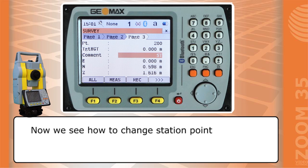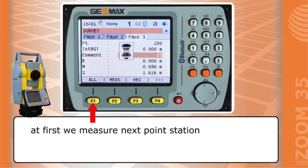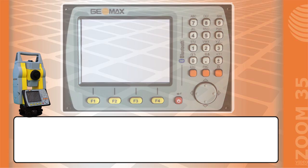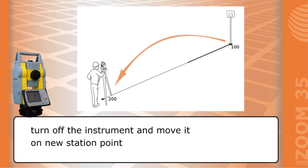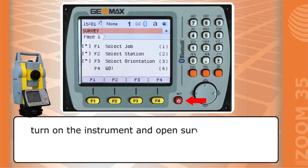Now we see how to change station point. At first we measure next point station. Turn off the instrument and move it on new station point. Turn on the instrument and open survey menu.